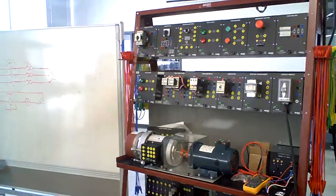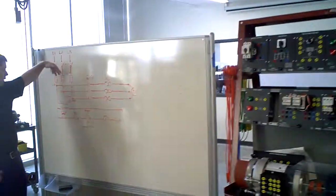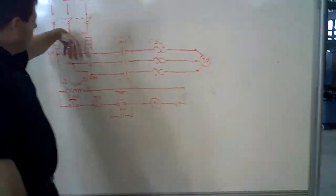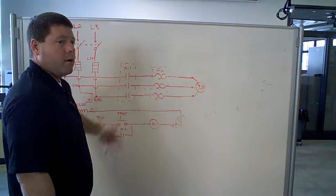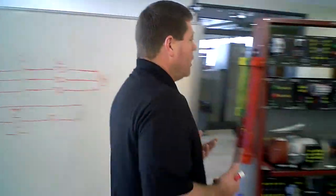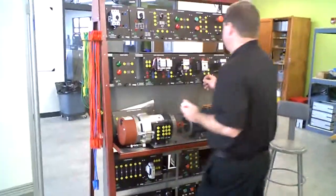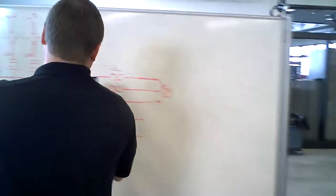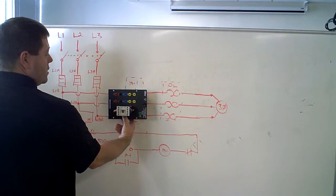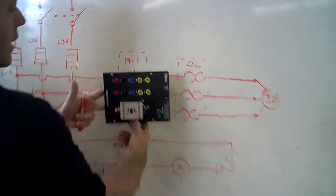So the next device here, the three legs come in, line one, two, and three come in. They disconnect through your fuses, and then they go out to your contactor. Your contactor, the purpose of the contactor is to close contact and send voltage to your motor. So you're going to have line one, two, and three come in. Line one, two, and three go out.